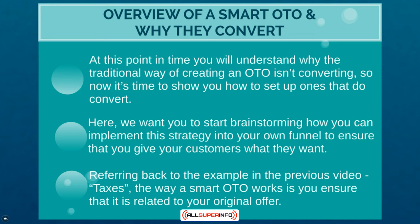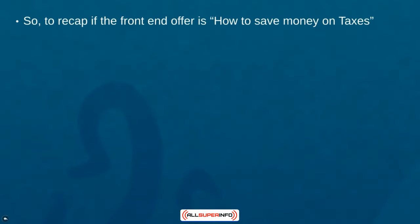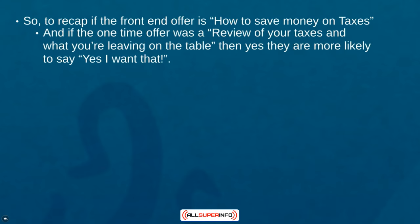Referring back to the example in the previous video about taxes: the way a smart one-time offer works is to ensure it is actually related to your original offer. You might think that's a no-brainer, but let's take this as an example. If the front-end offer is how to save money on business taxes, and the one-time offer is a manual review by a CPA of your taxes and what you could potentially be leaving on the table, then yes, they are more likely to say yes — because they bought the course knowing they may be losing money.